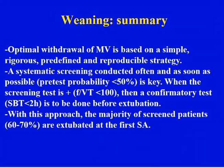To summarize: the optimal withdrawal of mechanical ventilation is based on a simple, rigorous, and predefined strategy. Systematic screening must be conducted early and as soon as possible, especially when the likelihood of weaning success is below 50%. When the best screening test — the f/VT ratio — is below 100, you must proceed with a confirmatory test: a maximum of a couple of hours of spontaneous breathing before proceeding with extubation. With this approach, the vast majority of screened patients will be extubated at the first attempt of separation. Thank you very much.